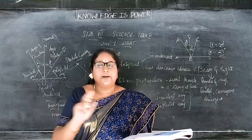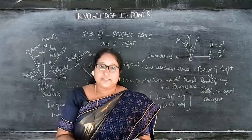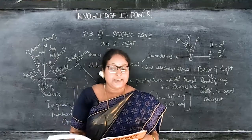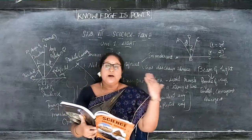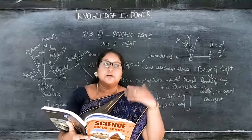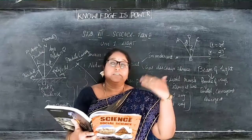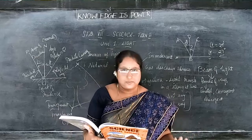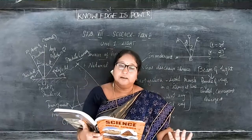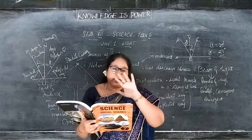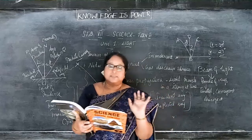Translucent means partial — objects that allow light to pass partially are called translucent. For example, we cannot see the image of someone who stands behind a rough window glass. If there are glass windows and they are closed, we don't know who is standing there clearly. That is translucent. We cannot see their face clearly. Someone may be standing there, but we don't know who it is — that is called a translucent material.